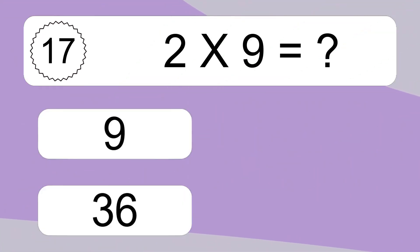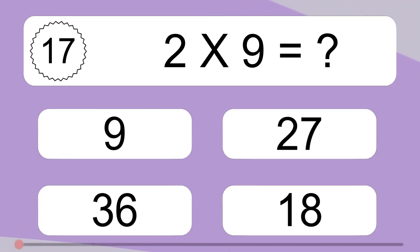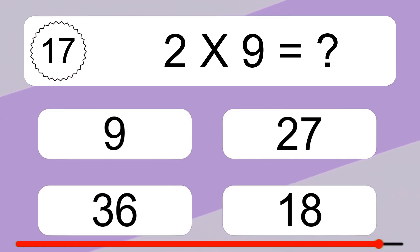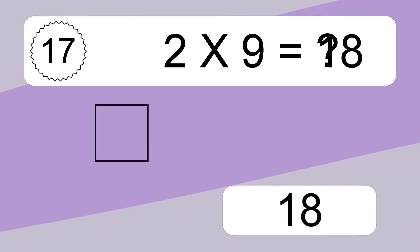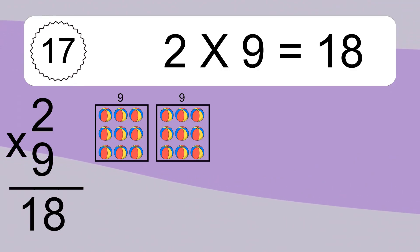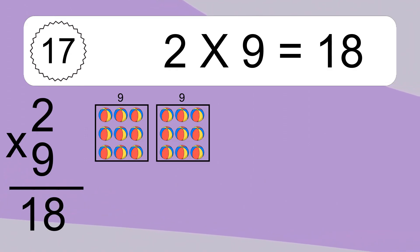2 times 9 equals what? 2 times 9 equals 18. We have 2 boxes, and each box has 9 colorful balls inside. If you count all the balls in all the boxes together, you will have 2 times 9 balls. This equals 18 balls.